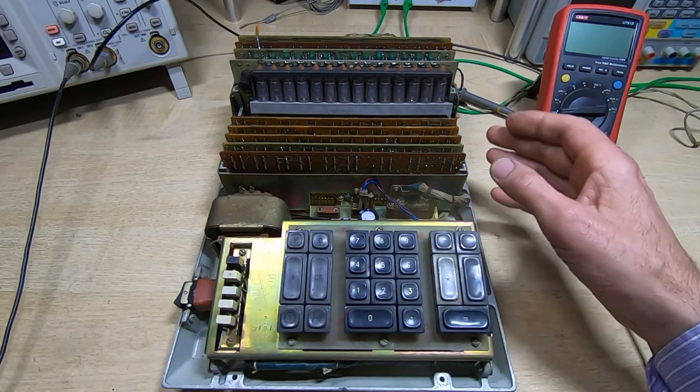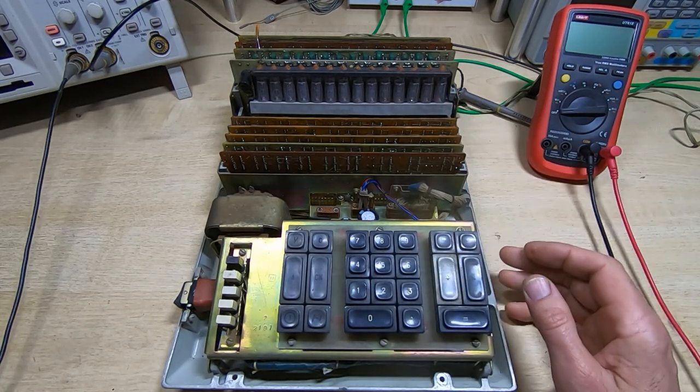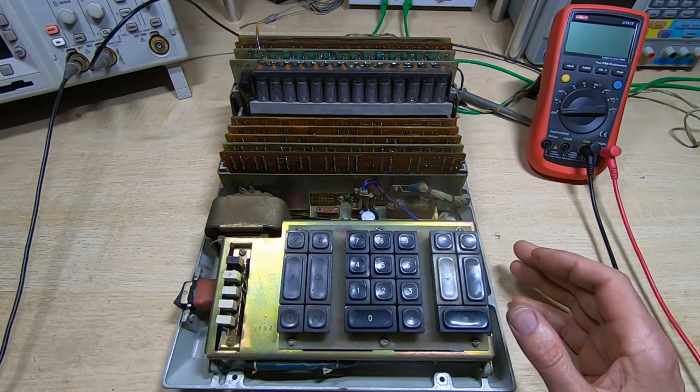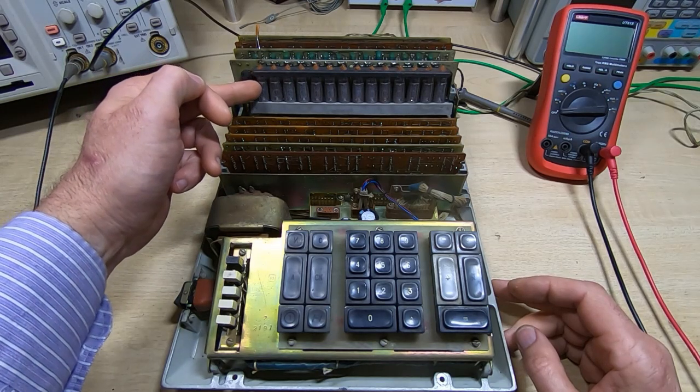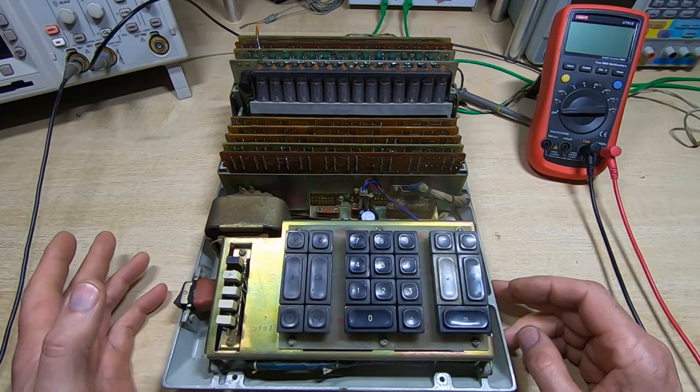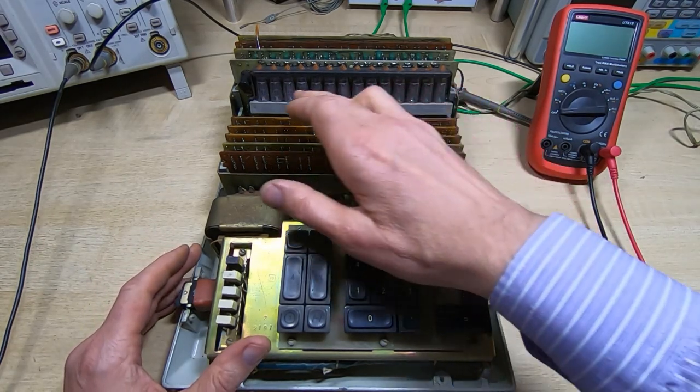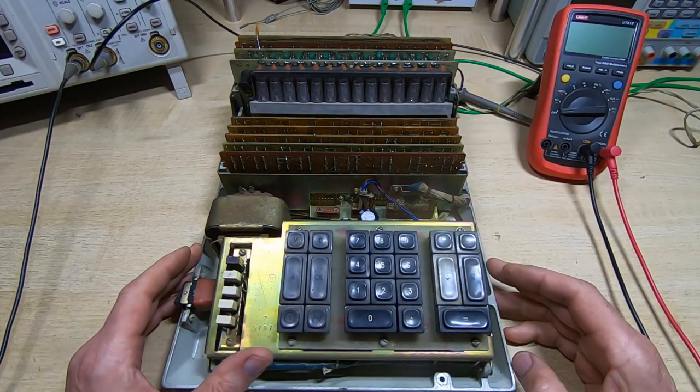The way I decided to start fault finding on this was to try and track down why the last digit wasn't working. As we found with the DTL calculator, if you get basically one of the digits not being readable or writable it can stop the machine from running.